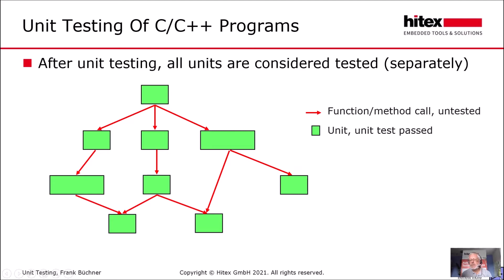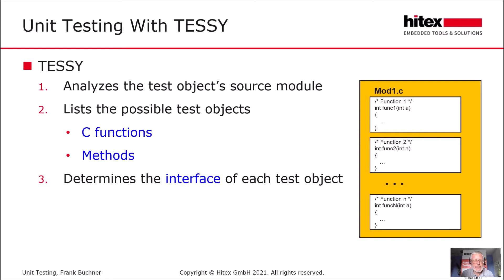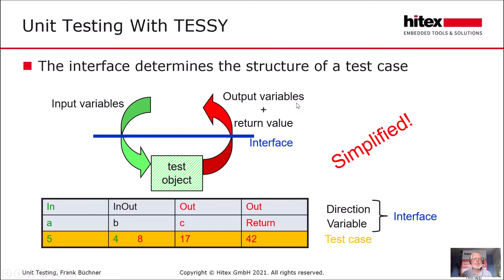Let's move forward to how unit testing with TESI works. We already know that our test objects are the functions or methods of a source file. We specify a source file to TESI, and then TESI analyzes it and lists all possible test objects — either C functions or methods. More importantly, TESI determines the interface of each test object. This is a simplified version of the interface showing only the upper part with input and output variables.